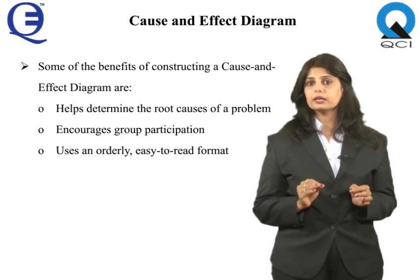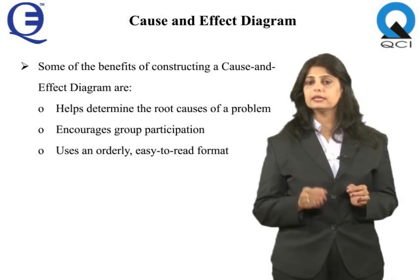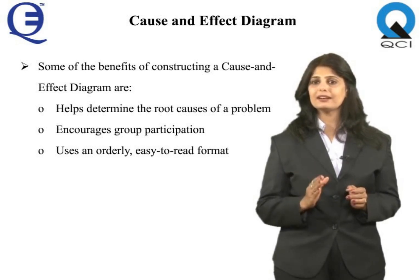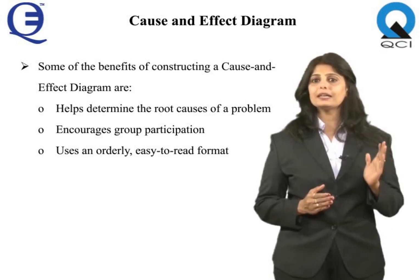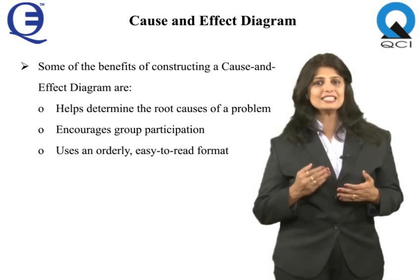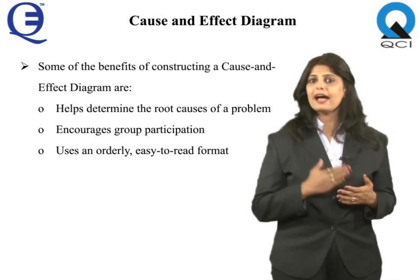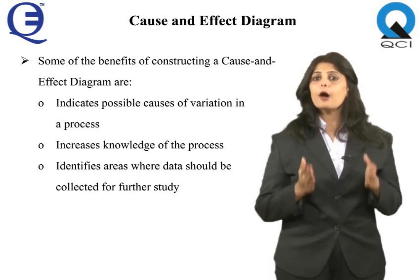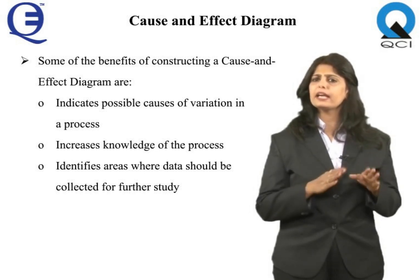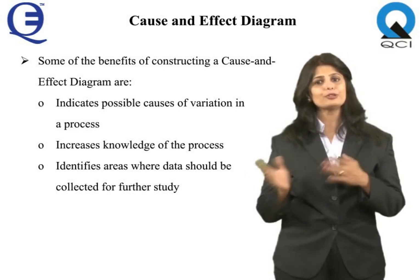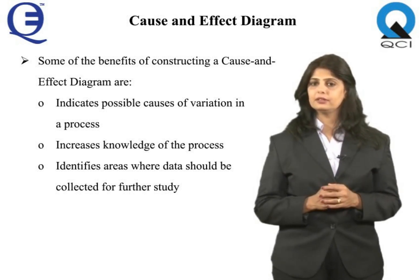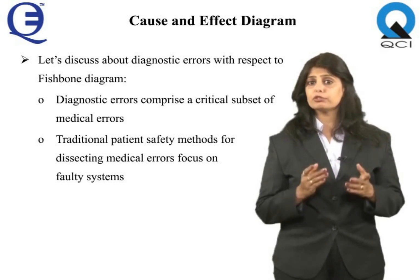The structure provided by the diagram helps team members think in a very systematic way. Some of the benefits of constructing a cause and effect diagram are that it helps determine the root causes of a problem using a structured approach, encourages group participation and utilizes group knowledge of the process, uses an orderly easy-to-read format to diagram cause and effect relationships, indicates possible causes of variation in a process, increases knowledge of the process, and identifies areas where data should be collected for further study.